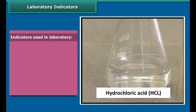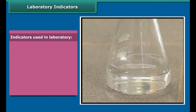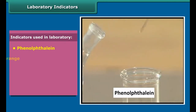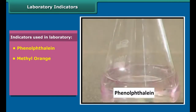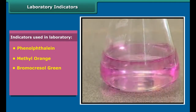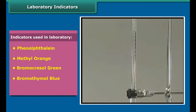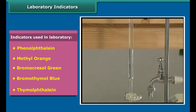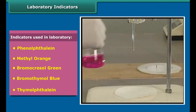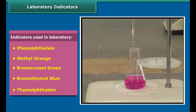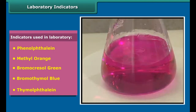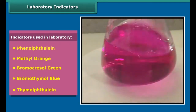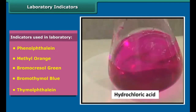Dip a clean stirring rod into baking powder solution and touch the wet rod to red litmus paper. The red litmus paper turns blue, indicating that the baking powder solution is alkaline in nature. Then dip a clean stirrer into vinegar solution and place one drop on blue litmus paper. The blue litmus paper becomes red, indicating vinegar is acidic in nature.